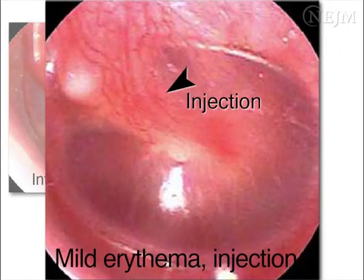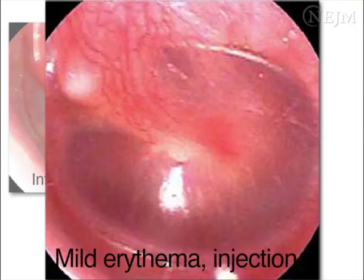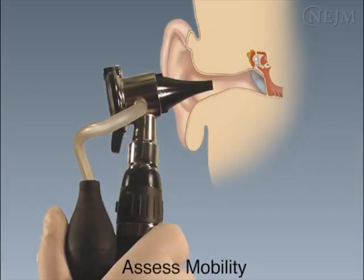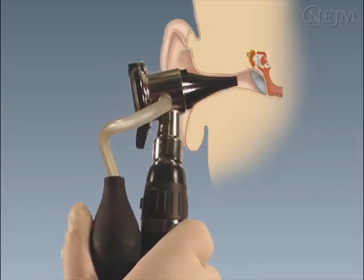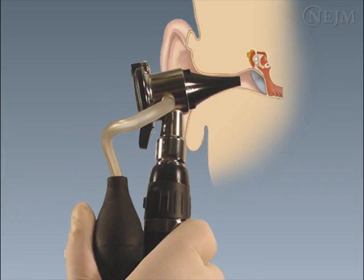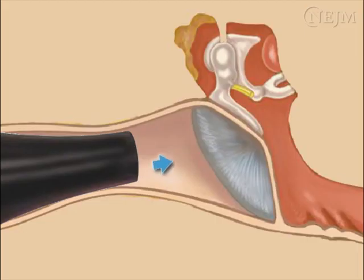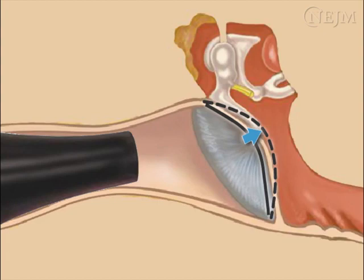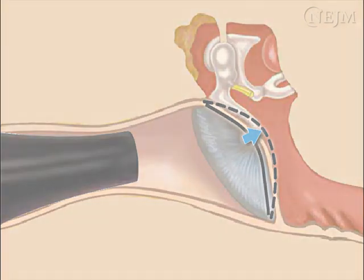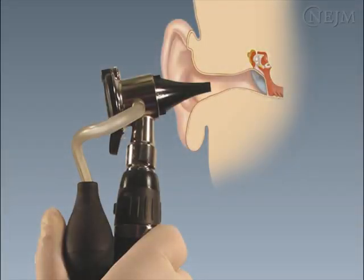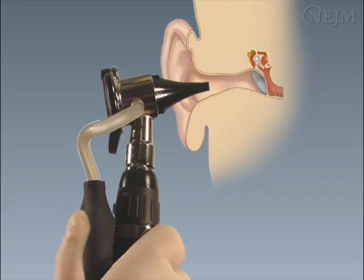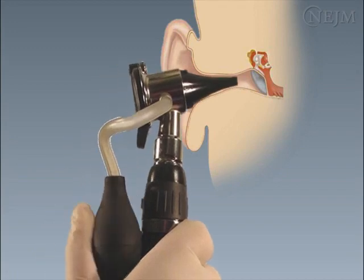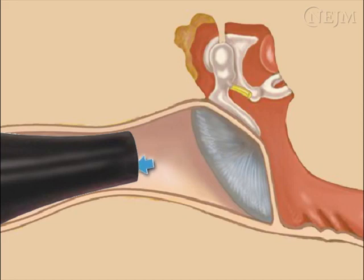Mild erythema and injection of the tympanic membrane are nonspecific findings and often occur if the child is crying during the examination. To create positive pressure, insert the pneumatic otoscope without placing any pressure on the bulb, then depress the bulb gently and observe the degree of movement of the tympanic membrane away from you. To create negative pressure, insert the otoscope with the bulb partially depressed, release the bulb, and observe the degree of movement of the tympanic membrane towards you.